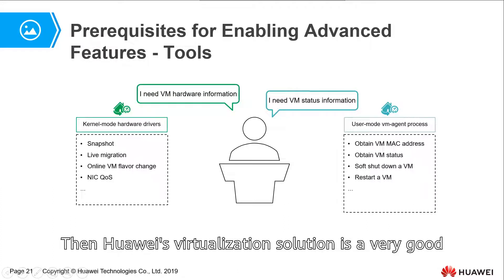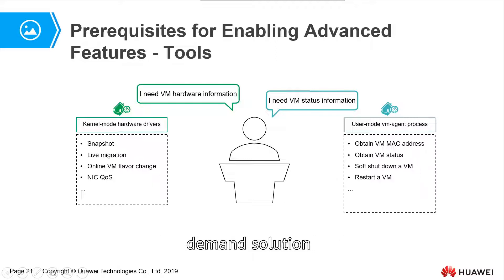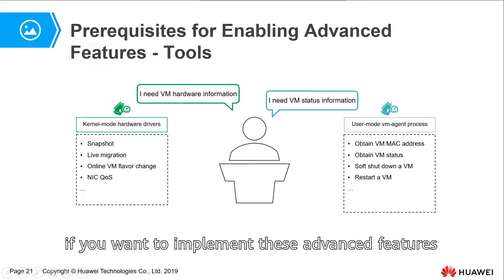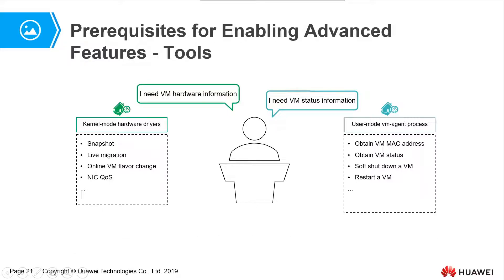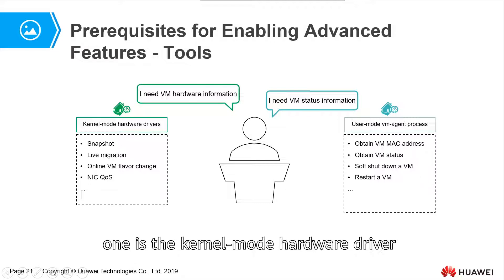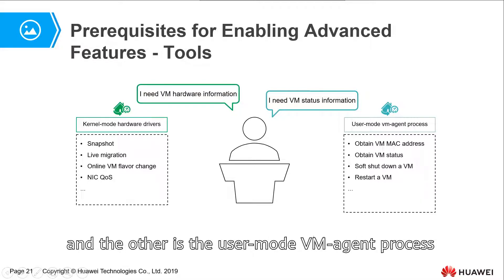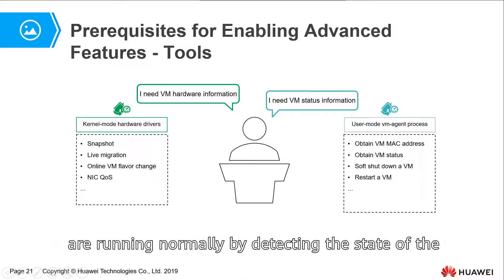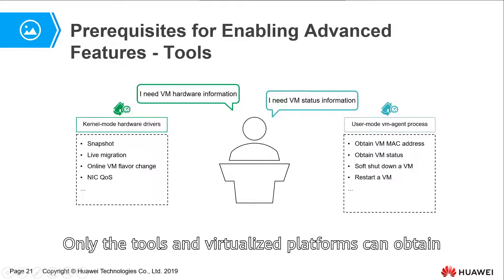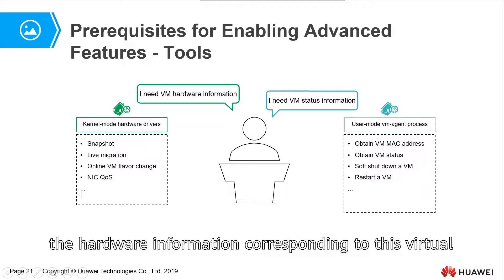Huawei's virtualization solution is a very capable solution. In Huawei's virtualization products, if you want to implement these advanced features, you must first install tools for the virtual machine. The virtual tools contain two parts: one is the kernel mode hardware driver, and the other is the user mode VM agent process. The virtualized platform determines whether the tools are running normally by detecting the state of the user mode process. Only with the tools can the virtualized platform obtain the hardware information corresponding to the virtual machine.